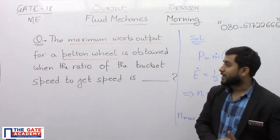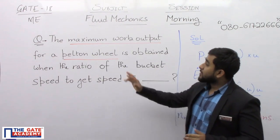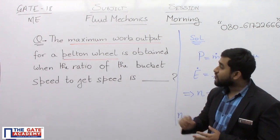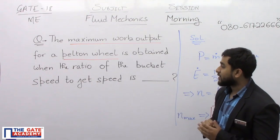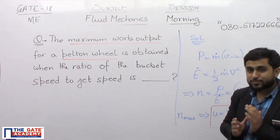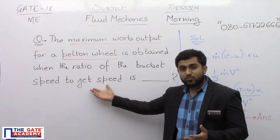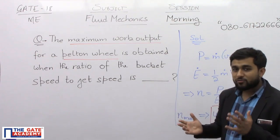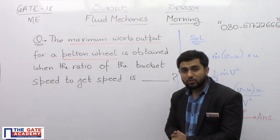What the question says is, the maximum work output for a Pelton wheel is obtained when the ratio of the bucket speed to the jet speed is. I think everyone knows what the jet speed is, it is the speed of the jet, water jet coming out of the nozzle.